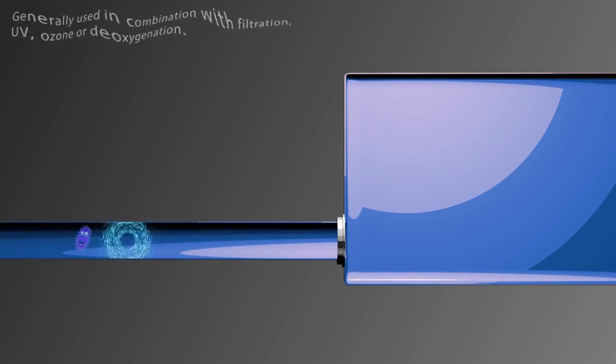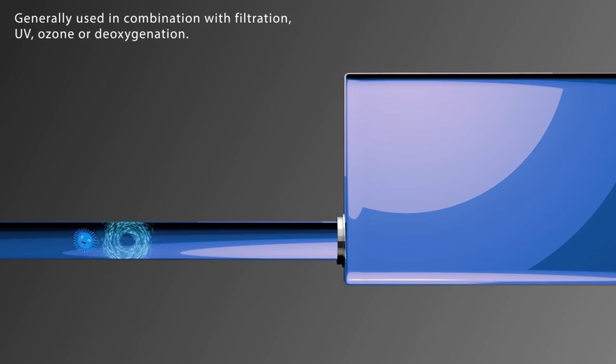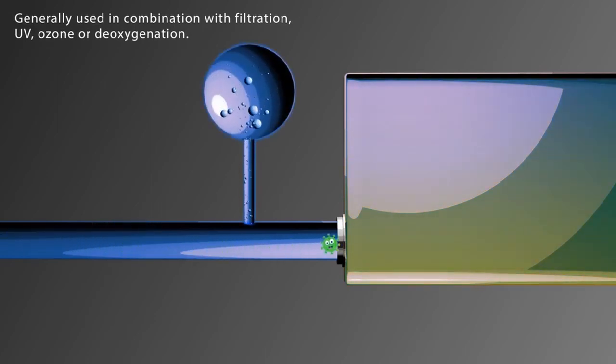Deoxygenation may be used in combination with other technologies such as cavitation or pasteurization. This treatment method involves stripping the oxygen from the ballast water to suffocate organisms. This is usually done by injecting nitrogen or another inert gas into the ballast water. The low oxygen level then kills most of the oxygen-dependent organisms. It generally takes several days for the inert gas to fully deoxygenate the water.